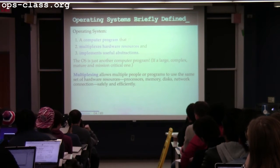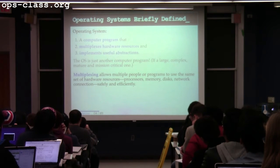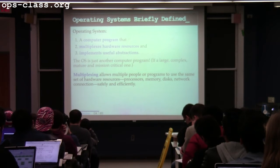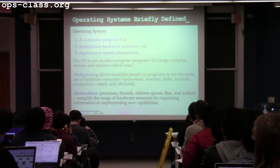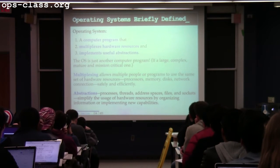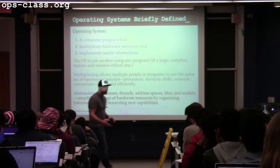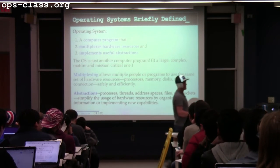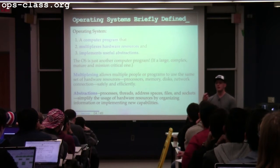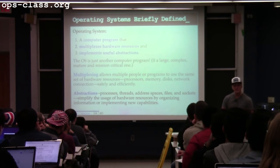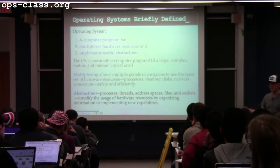Multiplexing allows multiple people and programs to use hardware resources efficiently and simultaneously sometimes. Abstractions simplify programming on hardware by providing ways of utilizing hardware that hide parts of the underlying realities. For example, a file is an abstraction — a disk block is a hardware reality. Files have all these fancy features that disks lack, and those features are provided in software by file systems, which we'll talk about later in the semester.